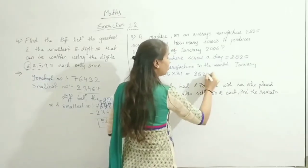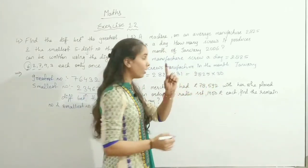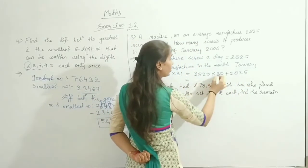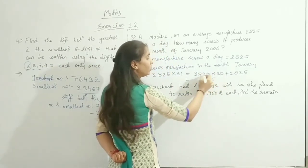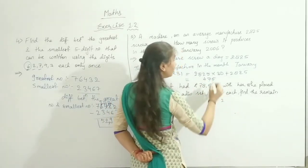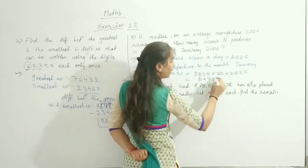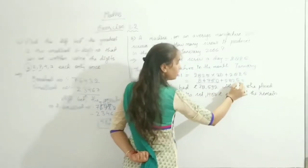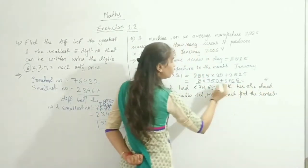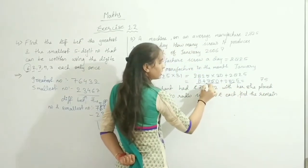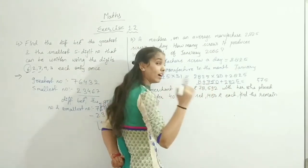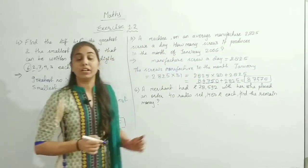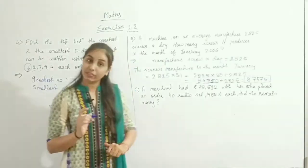2825 multiplied by 30: ones digit 5×3 is 15, carry 1; 2×3 is 6 plus 1 is 7; 8×3 is 24, carry 2; 2×3 is 6 plus 2 is 8. So 30 days gives 84750. Then we add 2825 for the extra day: 5 plus 0 is 5, 2 plus 5 is 7, 7 plus 8 is 15 carry 1, 4 plus 2 plus 1 is 7. Total screws manufactured in January is 87,575.